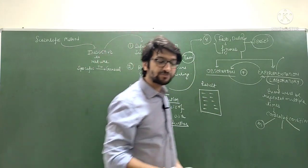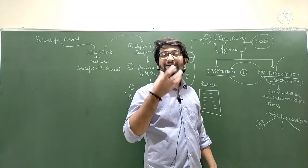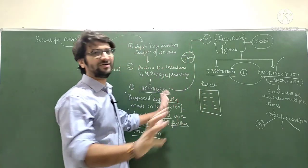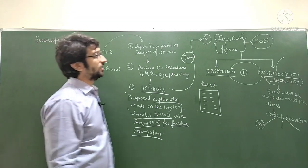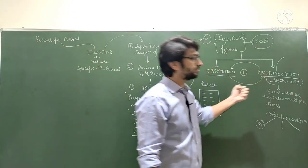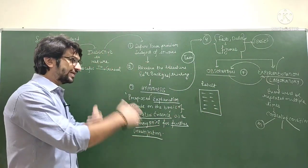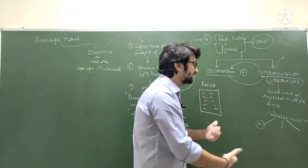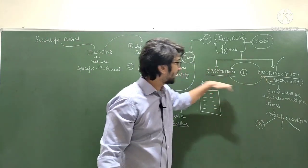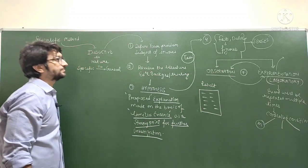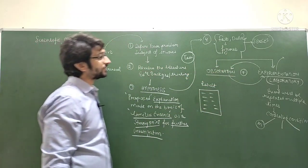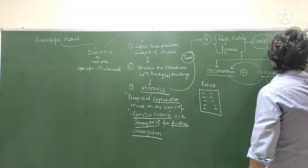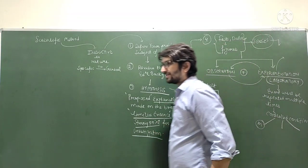Observation involves the use of senses. Since human senses are limited, humans build various observation instruments to enhance their observational power — for instance the telescope, the microscope, satellite imagery for climatology, and sensors in the ocean to study tsunamis. Man's observation and experimental power is continuously increasing with the advancement of technology.